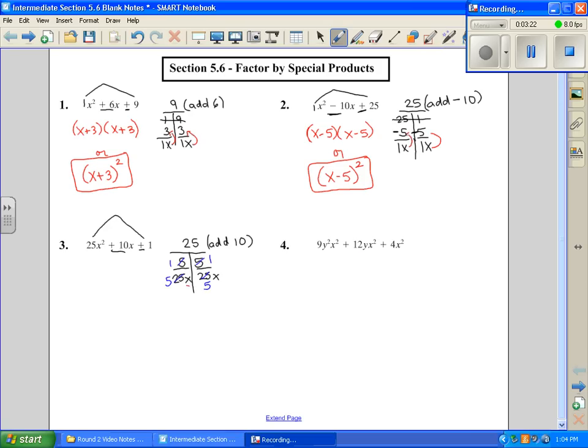Bottom up, 5x plus 1. And then over here, 5x plus 1. And we can rewrite as a squared term. So we're going to get 5x plus 1 squared.